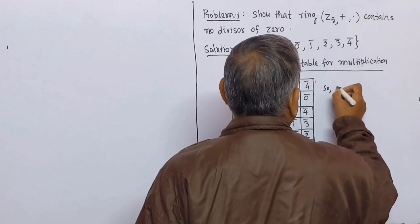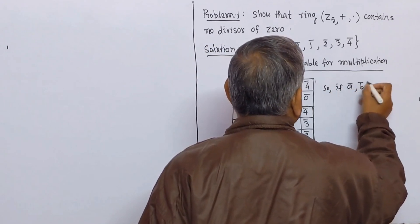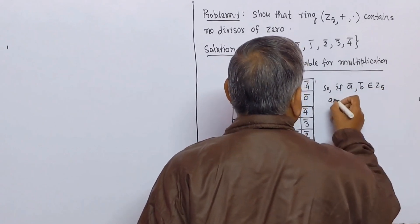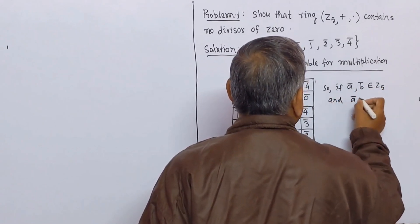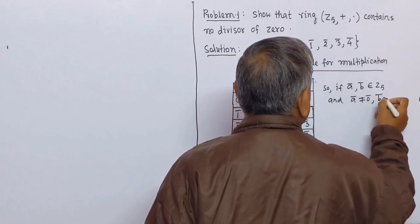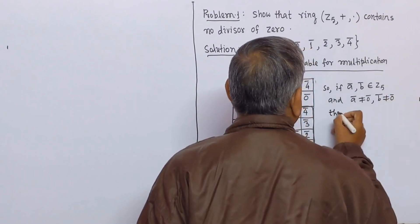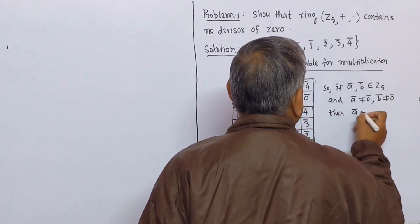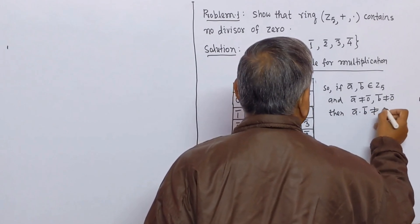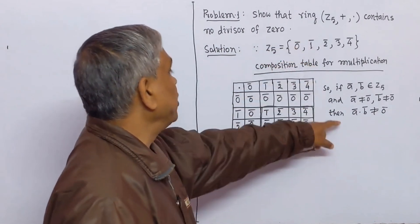So if a-bar and b-bar belong to Z5, and a-bar is not equal to 0-bar, b-bar is not equal to 0-bar, then a-bar multiplied by b-bar is not equal to 0-bar. Hence Z5 contains no divisor of zero.